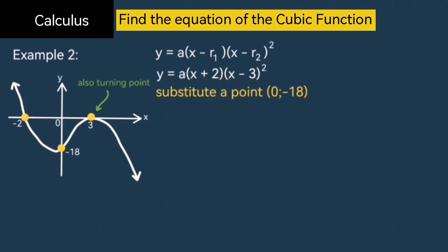It doesn't have to be the y-intercept, but it just is again in this case. Maybe for another example, I'll choose a different point. But substitute 0 and negative 18. x is 0, y is negative 18. And simplify that. Negative 3 squared is 9, and 2 times 9 is 18. Then dividing both sides by 18, we get a as negative 1.